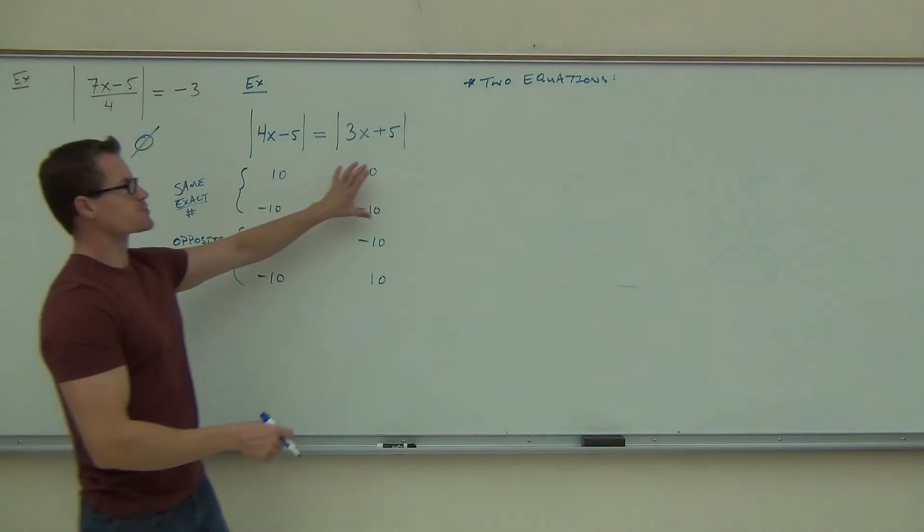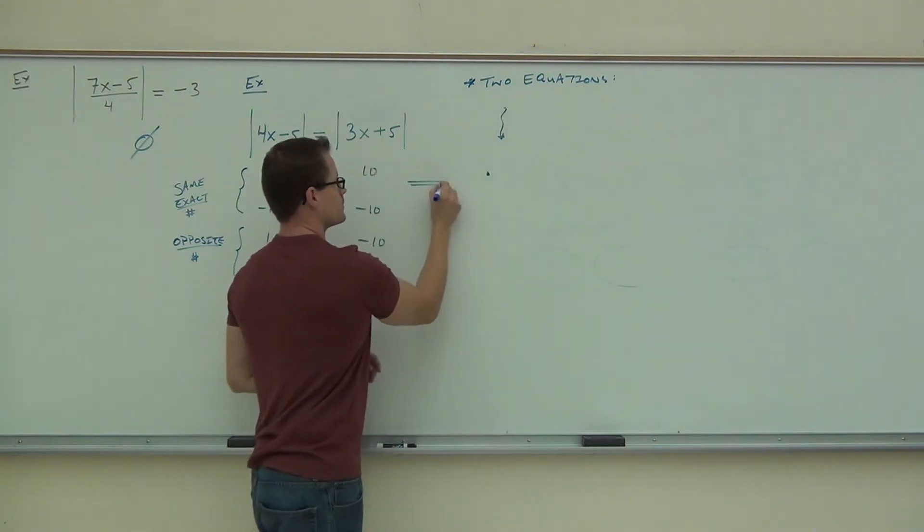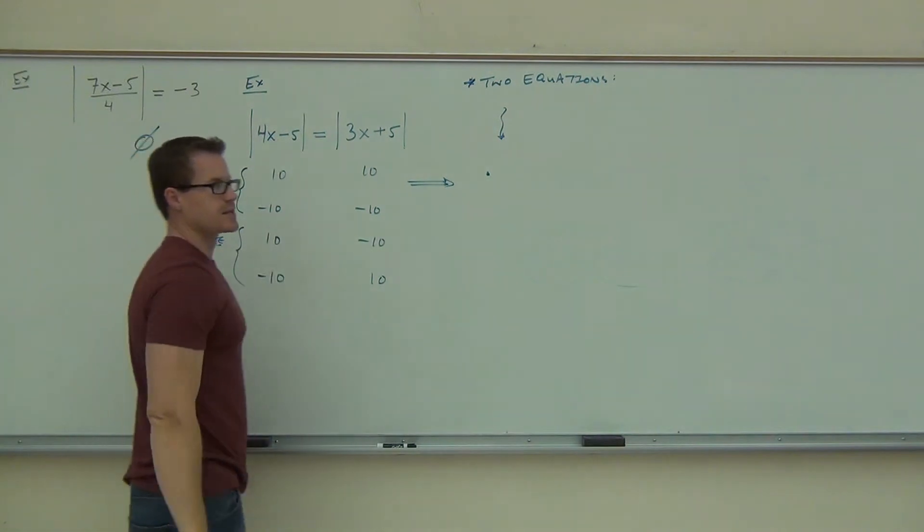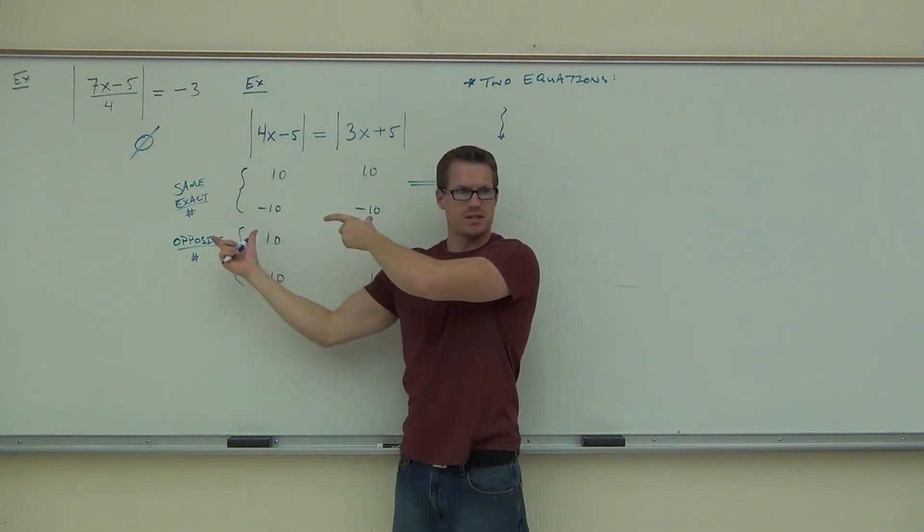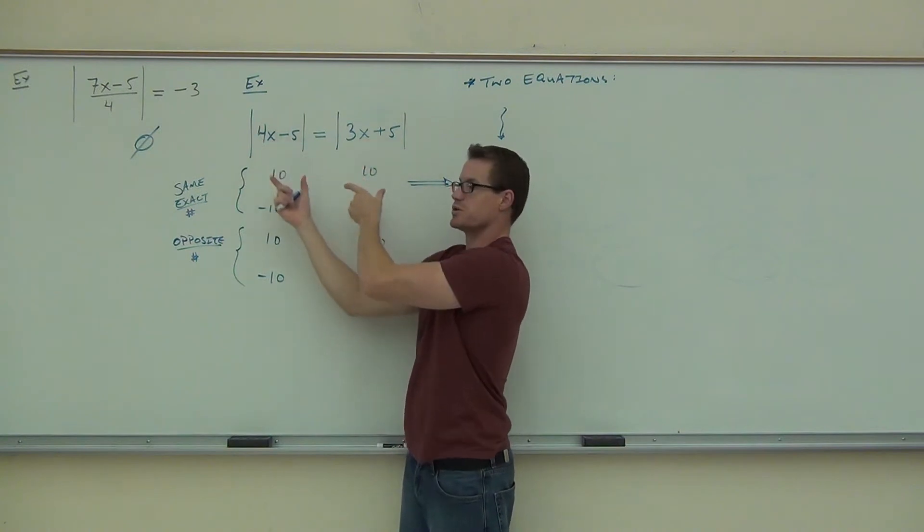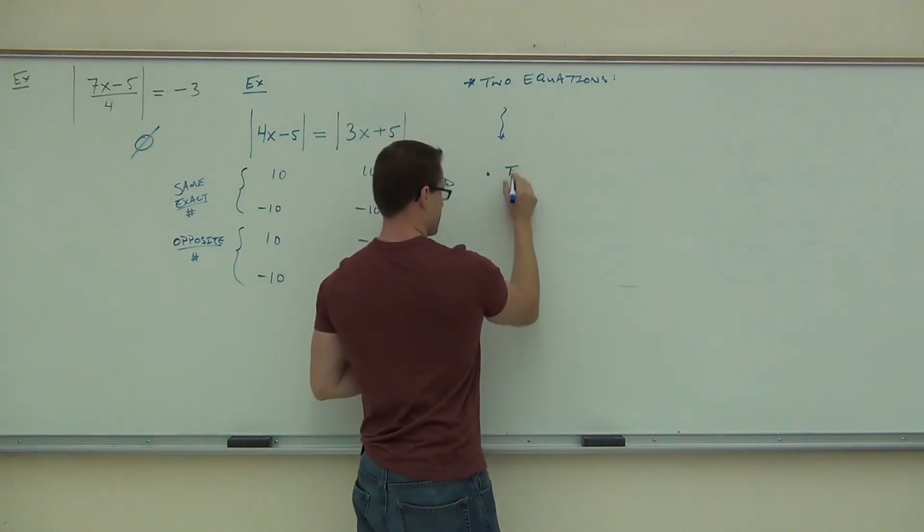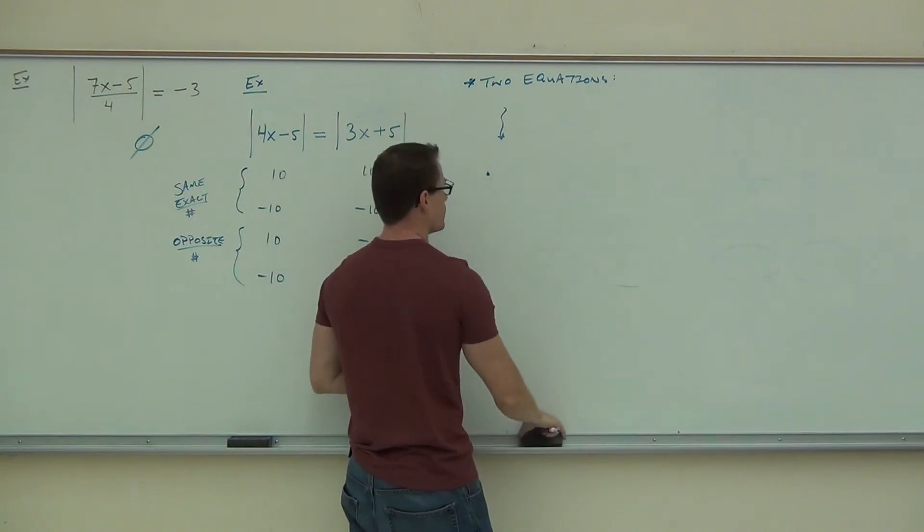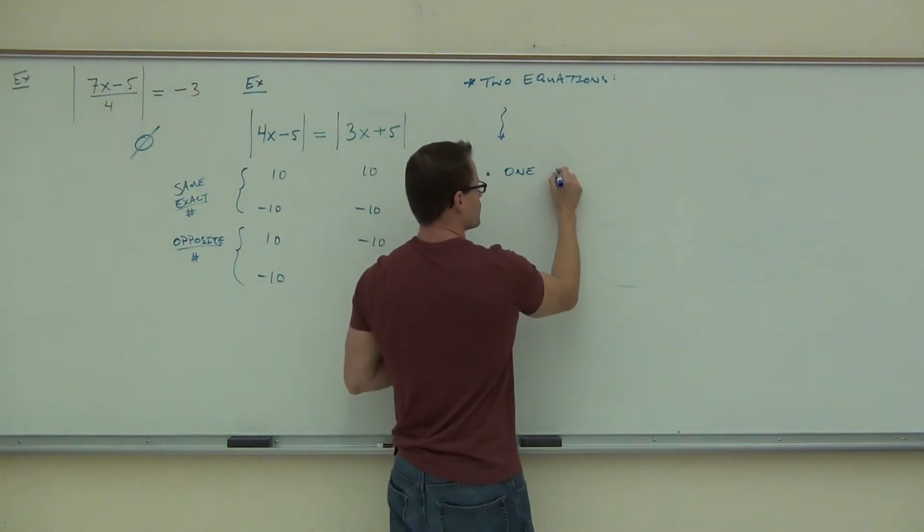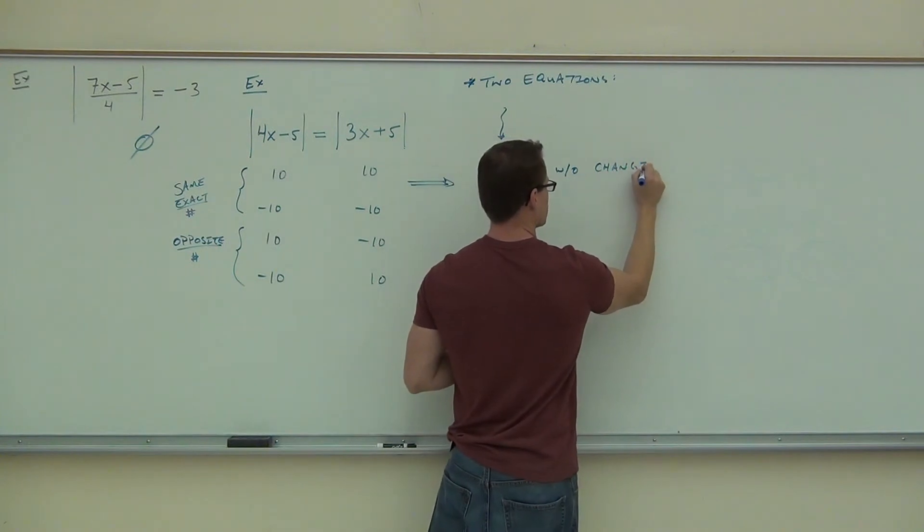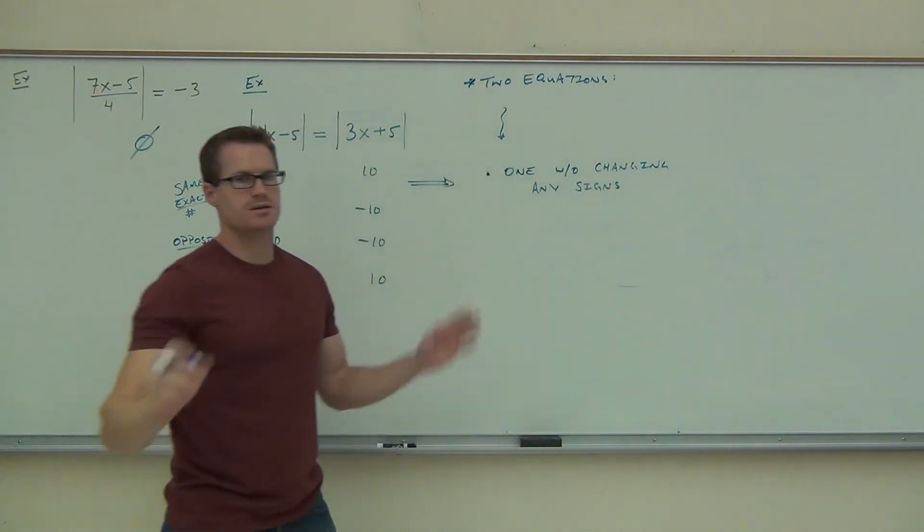And here's your equations. The first one leads to this equation. The first one, first case here, says if I just ignore the absolute values and make these insides equal to each other, I am going to get a valid solution. Does this make sense to you? If I just set these insides equal to each other, that's what this said. They are equal. So if I set the insides equal to each other, that gives me one. So one without changing anything, just equal to each other. One without changing any signs, directly equal.